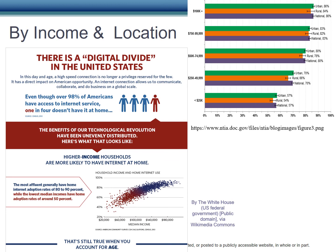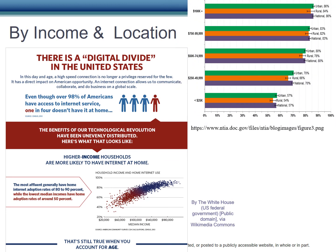Similarly, when comparing income and location, we find that those with higher incomes who live in non-rural areas tend to have higher adoption rates than those who don't. Moreover, this is true at every level of income. If you live in rural areas, you are less likely to have access, and if you make less money, you are less likely to have access. The two variables are clearly related.